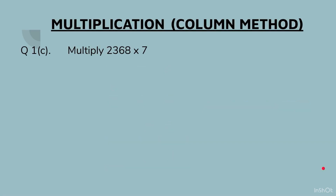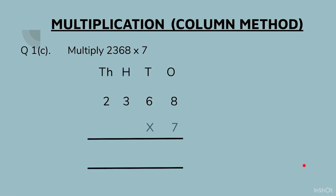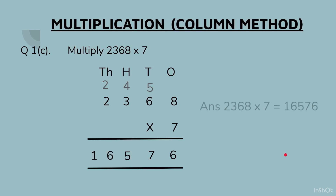Part (c): 2368 × 7. Starting with the ones column: 7 eights are 56 — write 5 at the top and 6 at the bottom. 7 sixes are 42, plus 5 gives 47 — write 4 at the top and 7 at the bottom. 7 threes are 21, plus 4 gives 25 — write 2 at the top and 5 at the bottom. 7 twos are 14, plus 2 gives 16. Answer: 2368 × 7 = 16,576.